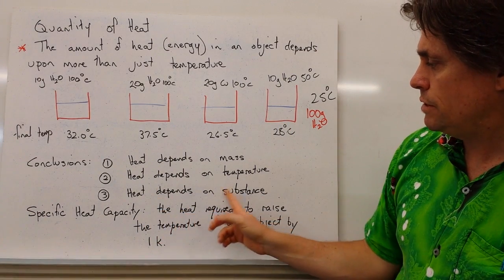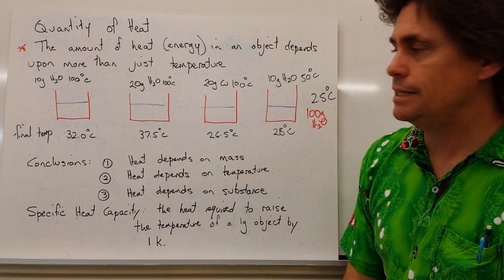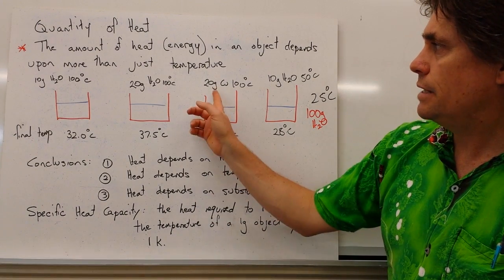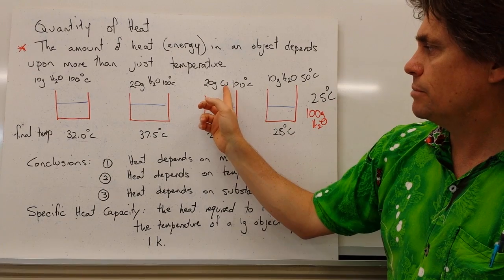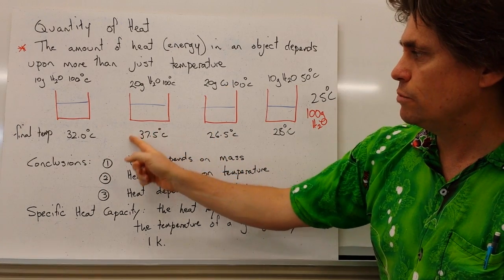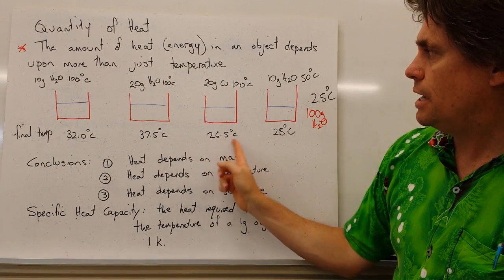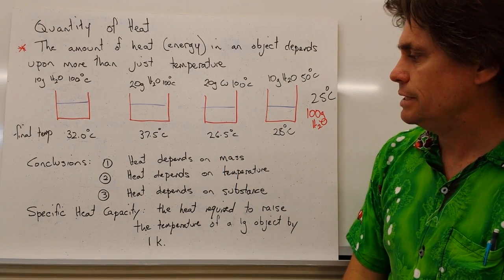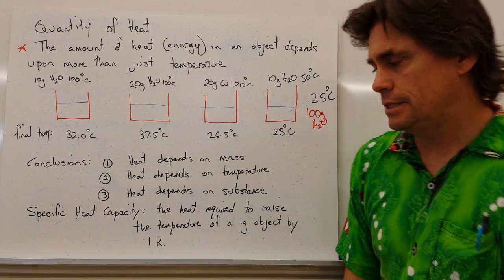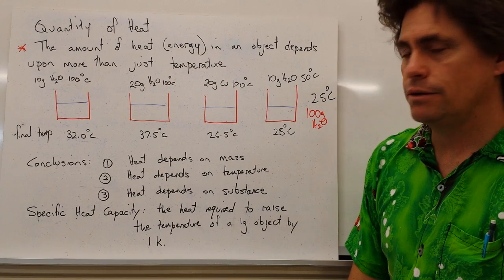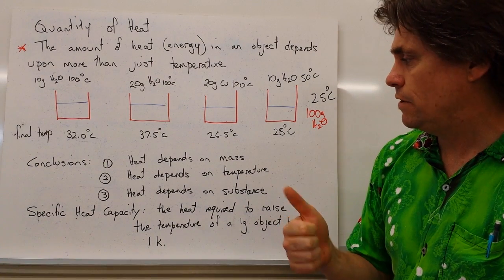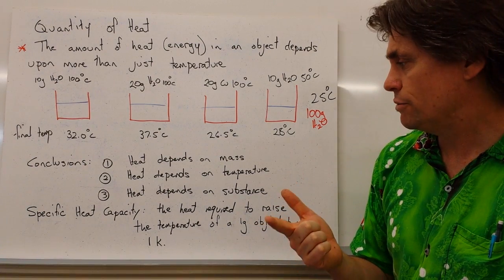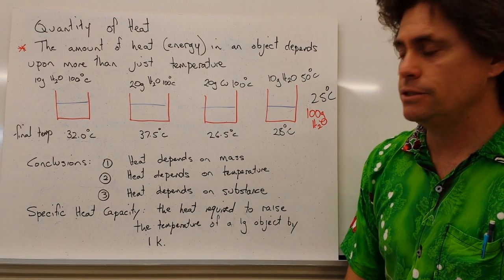And finally, heat also depends on the substance that we add to the system. So we added 20 grams of water, 20 grams of copper. The final temperature with the water at 100 degrees C was much higher than the copper at 100 degrees C. This points us to three things. We must have mass involved, we must have a change in temperature involved, and it also depends on the substance.